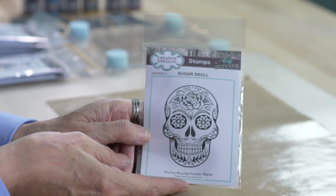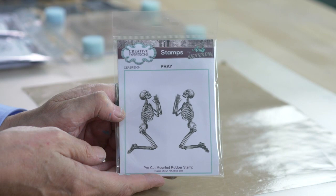Then we have the Mexican Sugar Skull. We have one called Prey which has the two praying skeletons. These are all pre-cut and mounted.